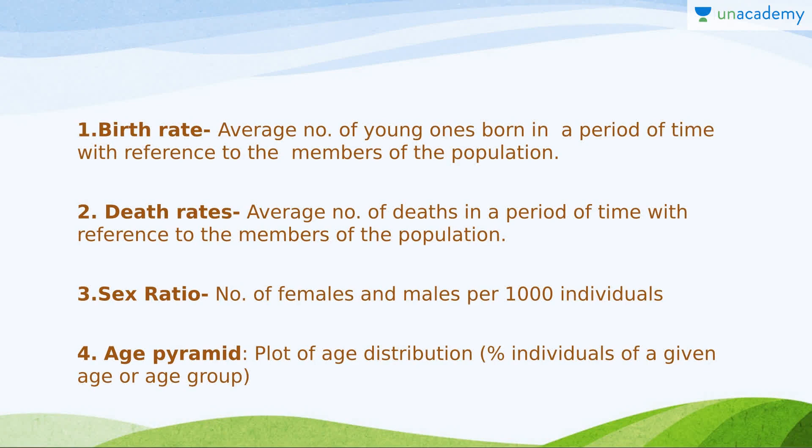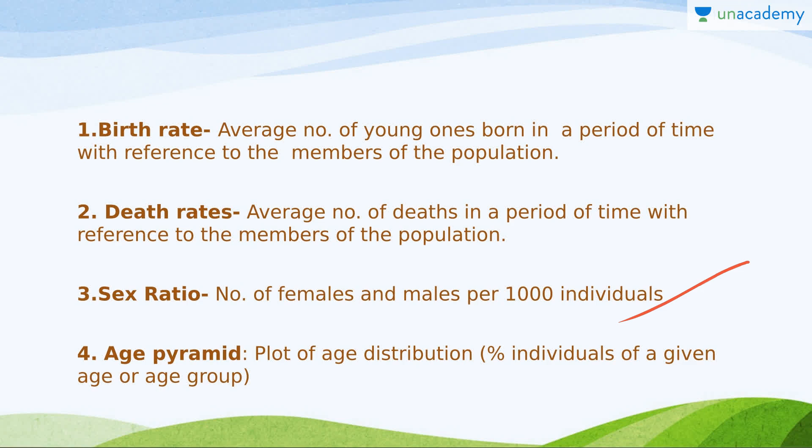The attributes of a population include: birth rate — the average number of young ones born in a period of time with reference to the members of the population; death rate — the average number of deaths in a period of time with reference to the members of the population; and sex ratio — the number of females and males per thousand individuals.